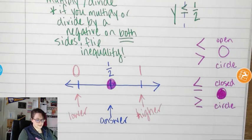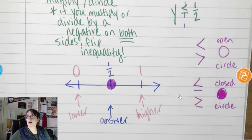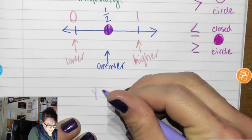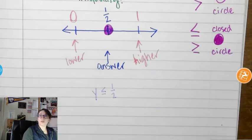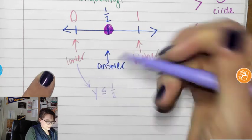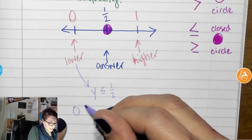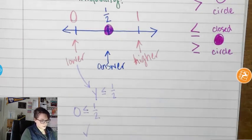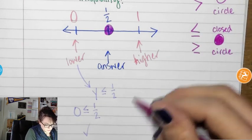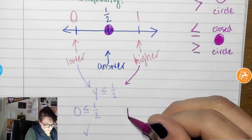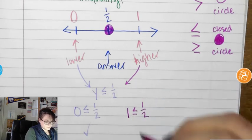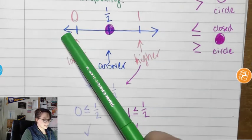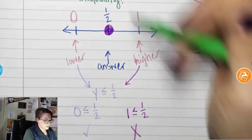Now, when I shade it, I'm dealing with y is less than or equal to 1 half. I take this number and I plug it in for y. Is 0 less than or equal to 1 half? Yes, it is. Is 1 less than or equal to 1 half? No. I shade towards the one that makes it true. 0 is less than or equal to 1 half. So I shade this way.